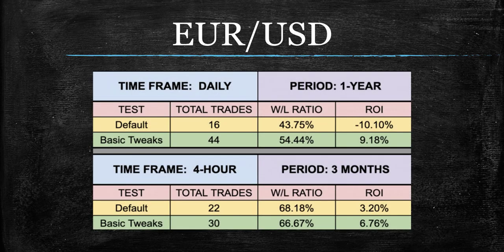We always start with the EURUSD. And pretty good — that is not a bad place to start right there. Also notice the amount of trades went up; you just have to decide if you're comfortable with that. To change this from minus 10% to 9.18% is pretty good. These tweaks I'm talking about are actually over here, so when you go to the blog, that's where you will find them. The 4-hour is also pretty solid across the board, just not as good as what you would see here, but a higher win rate — so you judge for yourself on that.